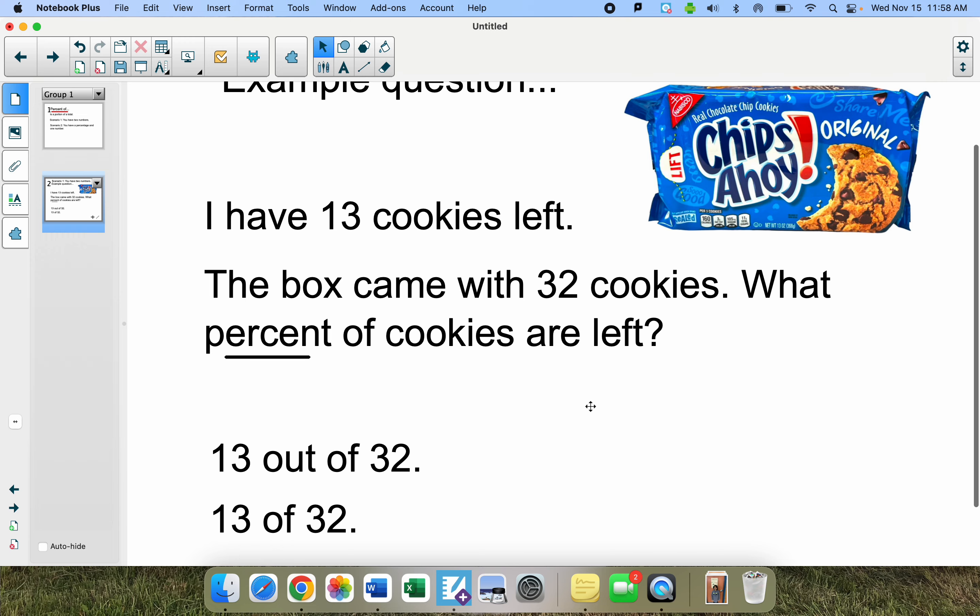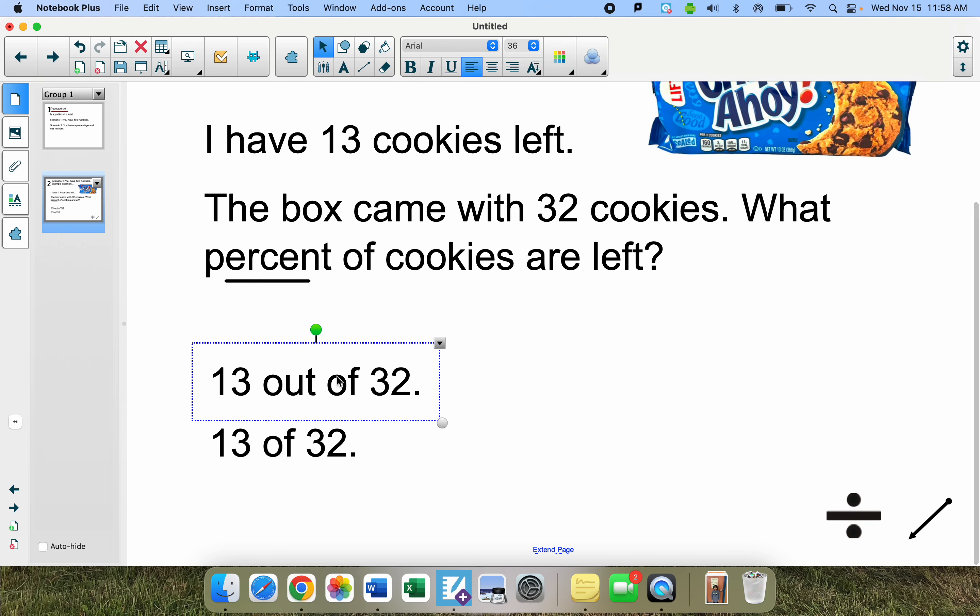So this question came with two numbers. There's 13 of 32 cookies or you could say there's 13 of 32. Either way, we're going to set this question up and make it look like something familiar. If you got, for example, this was a test and you got 13 out of 32, it might be written on your paper like this.